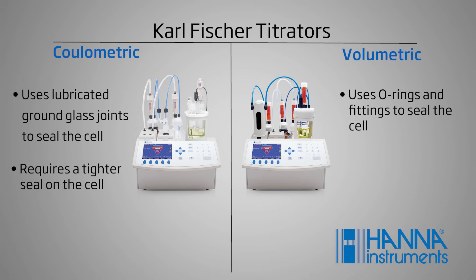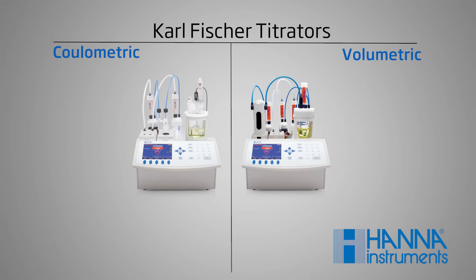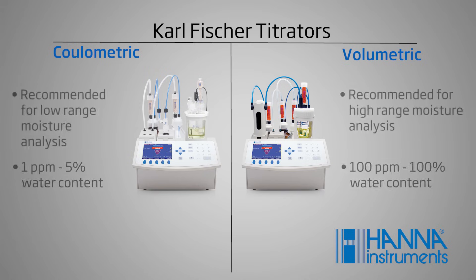So what does all this mean for you? At Hanna we usually recommend volumetric titrators for high range moisture between 100 parts per million to 100% water content. For lower ranges from 1 part per million to 5%, the coulometric titrator is best suited for the job.